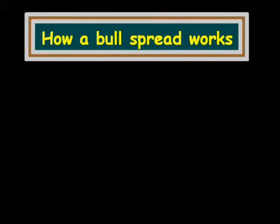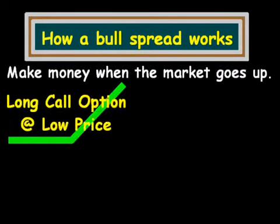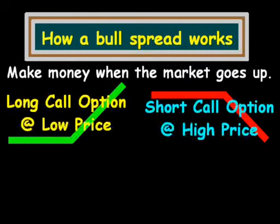Hi, this is Gary. In this video, I'm going to cover conceptually how a bull spread works. The objective in a bull spread is to try to make money when the market goes up. Conceptually, what we're doing is we are buying a call option at the lower of the two prices, and we are going to sell short a call option at a higher price.